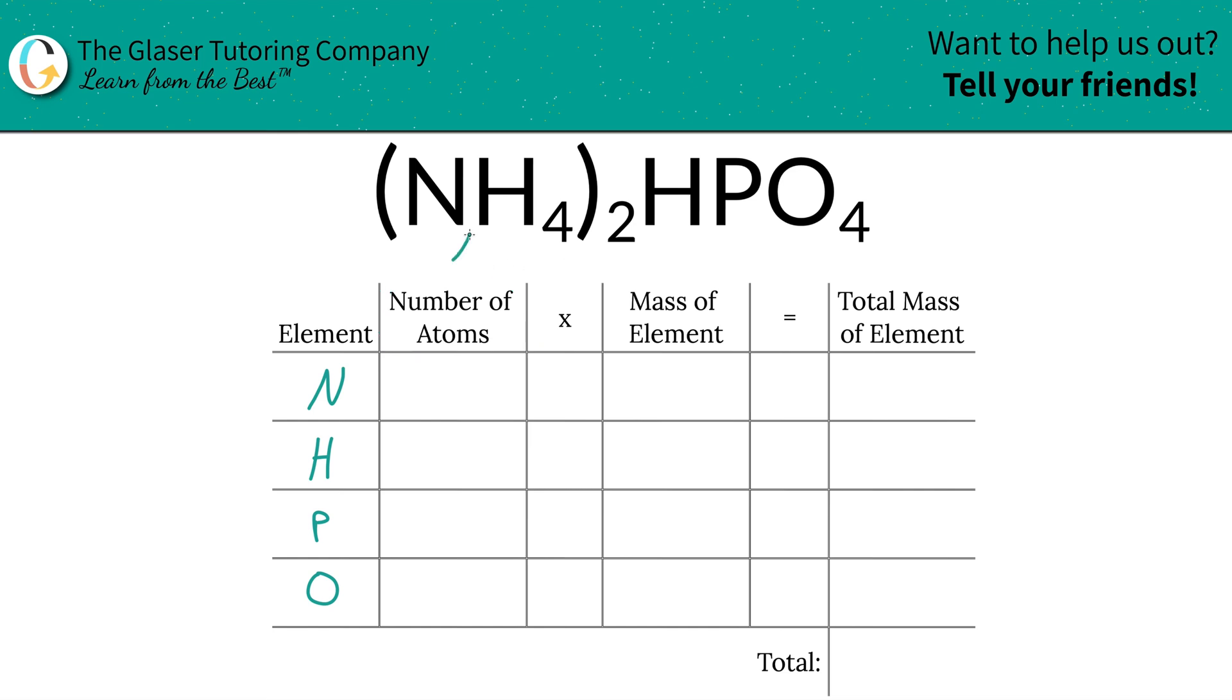Then we're going to write the number of atoms of each, and that's where the subscripts come into play. Now there's a couple of subscripts going on, so we've just got to be careful. Anywhere there is no subscript, just put in a one for now. So in terms of nitrogen, the total amount of nitrogen is not only one, because inside of the ammonium ion you have one nitrogen, but you have two ammonium ions, and therefore you'd have two nitrogens. In other words, the simple way to calculate it is just take the inner subscript, multiply it by the outer subscript to find the total. So we'd have two nitrogens.